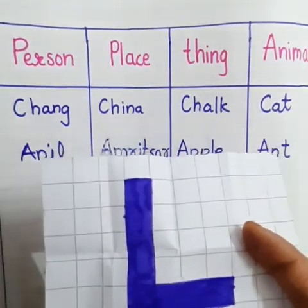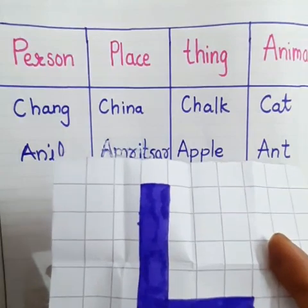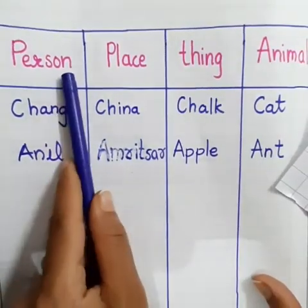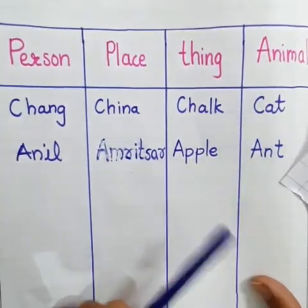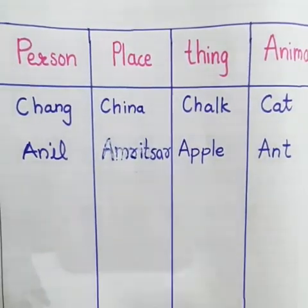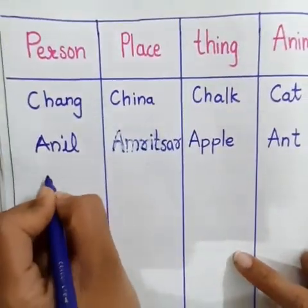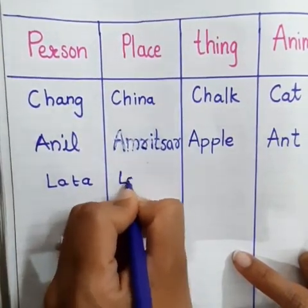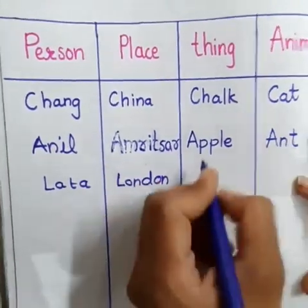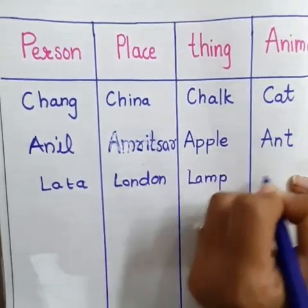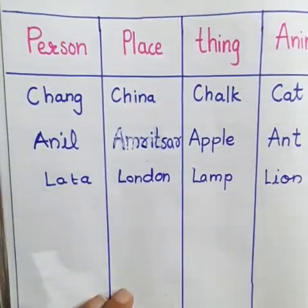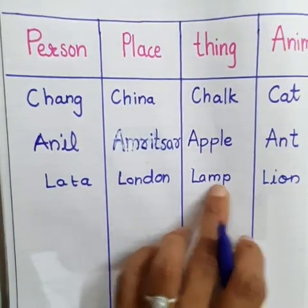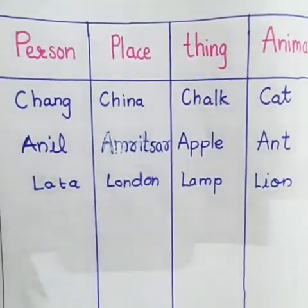I have taken the alphabet L. So let us play. Let us think and write the name of a person, place, thing, and animal using the alphabet L. For thing: Lamb; for animal: Lion.